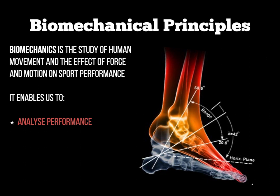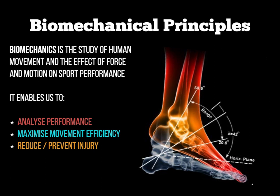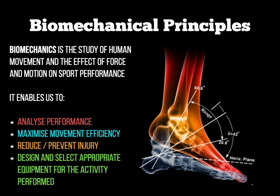Biomechanical principles allow us to effectively analyse someone's performance in great detail, and by analysing that performance we can maximise movement efficiency for things like skills or running technique, as well as object movement efficiency — things like bikes and Formula One cars. We can also reduce and help prevent injuries occurring to athletes through sport, and modify and create equipment using biomechanical principles. For example, the design of Formula One cars has rapidly changed over the years, promoted through sports science and biomechanical principles to increase speed and safety.